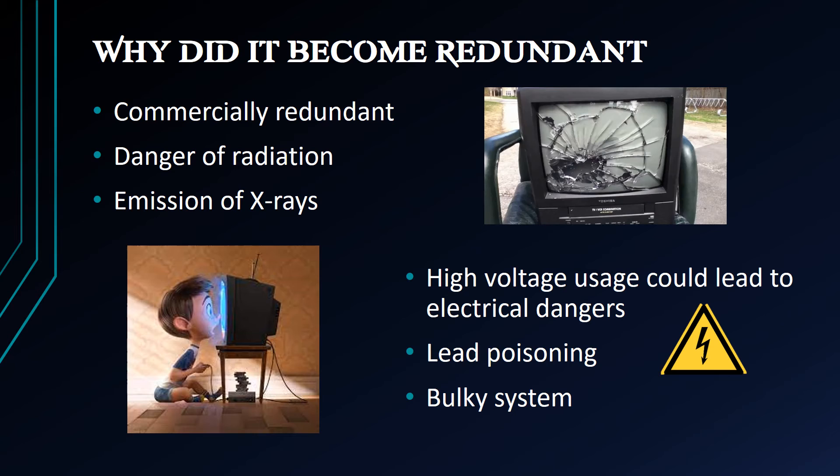Older models of CRTs emitted X-rays. The acceleration of electrons occurring in the CRT, which resulted in making the displayed images brighter, needed a higher voltage supply — roughly 27,000 volts. Harmful ionized particles, chances of getting electrified, and fire were other reasons why CRTs were not safe to be close to.